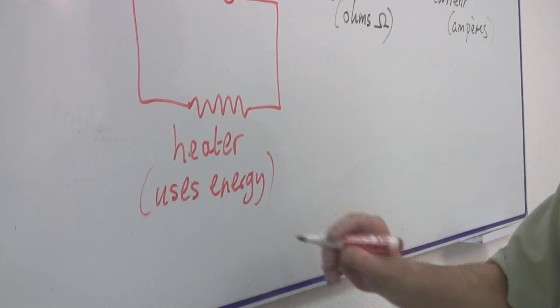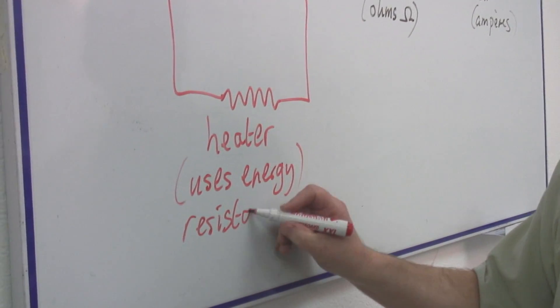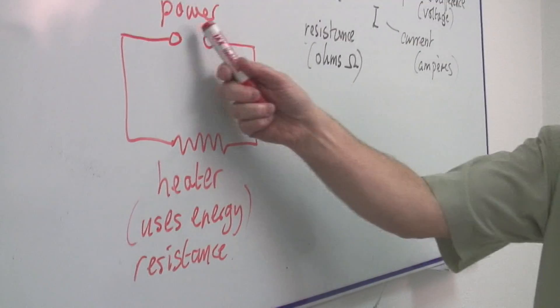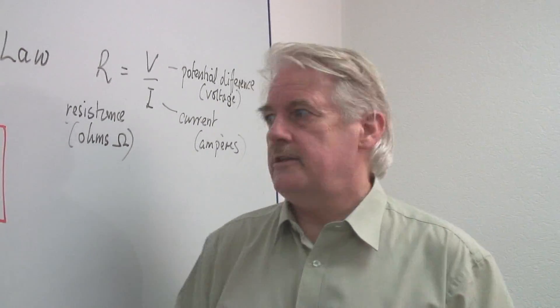And because it uses energy, we say it has resistance. If it has resistance, it uses energy. The power supply also has a little resistance and therefore that gets hot and that wastes energy.